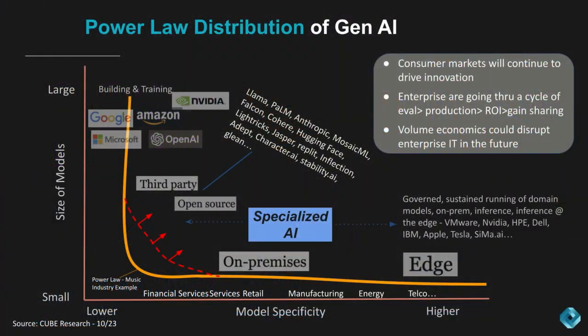Inferencing will occur using smaller data sets in the cloud and on-prem as well. The red lines here, pulling the torso up to the right, are a function of a spate of third-party and open-source tools and LLMs that are emerging that are going to have market impact, in our view.